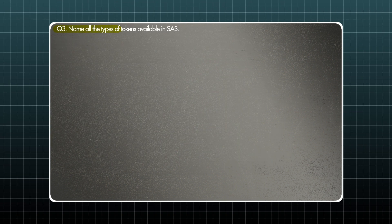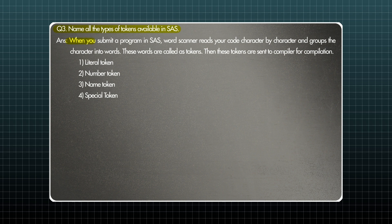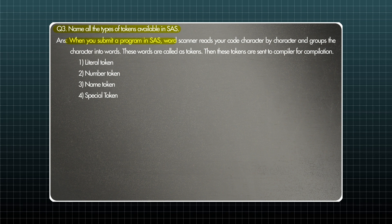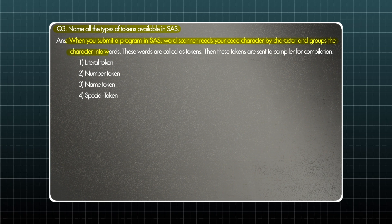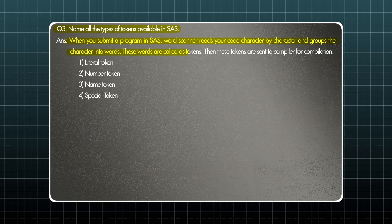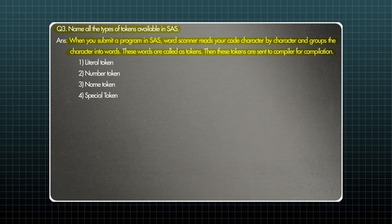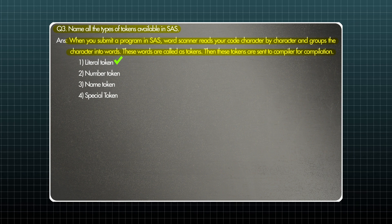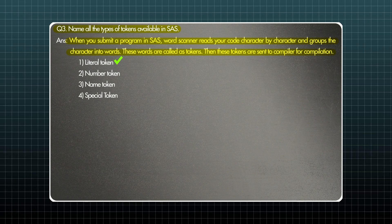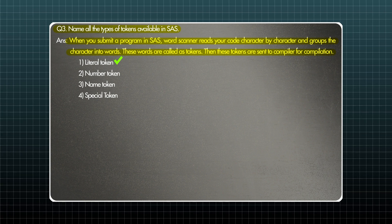Let's move on to the next question: Name all of the types of tokens available in SAS. First, let's understand what a token is. When you submit a program in SAS, the scanner reads your code character by character and groups the characters into words — these words are called tokens. These tokens are then sent to the compiler for compilation. There are four types of tokens. The first is a literal token, which contains all text inside double or single quotation marks. The second is a number token — if any number is involved, that is a number token.